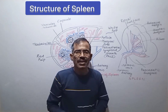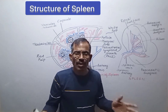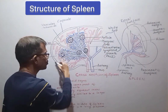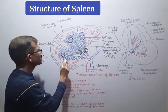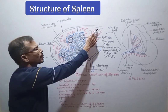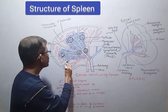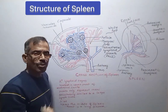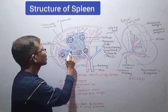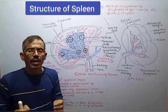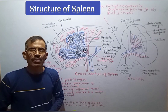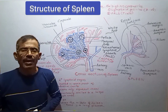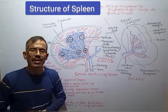Spleen is a solid encapsulated organ. It is protected by a dense connective tissue capsule, which extends inwards at several places, thereby forming numerous septa called trabeculae. By doing so, it divides the organ into many lobules. Like thymus, spleen also possesses only efferent lymphatic vessels; afferent lymphatic vessels are absent.